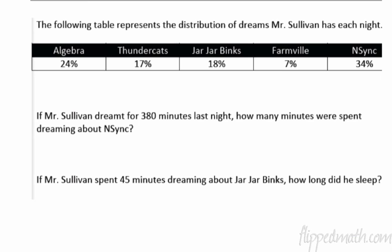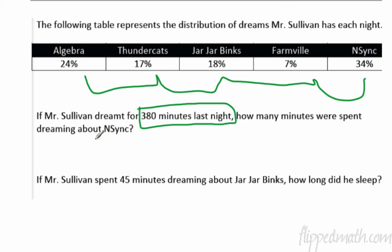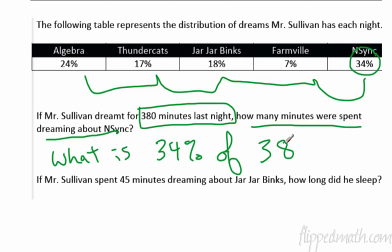And I think that's it. Right? Oh, I love this problem. It's Mr. Sullivan and his dreams. If Mr. Sullivan dreamt. All right. So here's the distribution of dreams right here. Oh, look at all those. Farmville, NSYNC, Jar Jar Binks. Sully dreams about these each night. If he dreamt for 380 minutes last night, how many minutes were spent dreaming about NSYNC? So you want to know that. I mean, this is the total. This is the total here. So how many minutes were spent dreaming about NSYNC? That is the question. So basically, it's 34% of 380. So you want to know, what is 34% of 380? That's the question you want to answer.